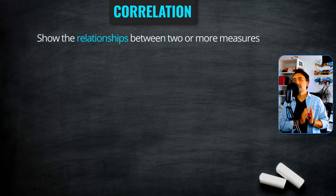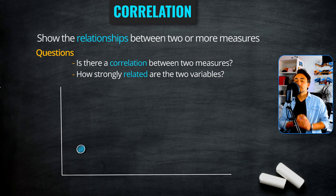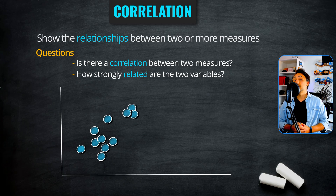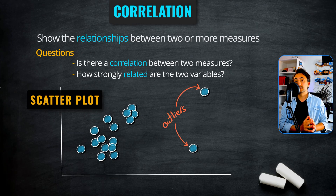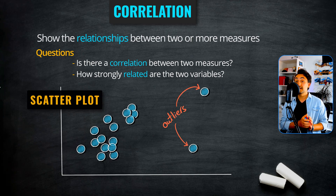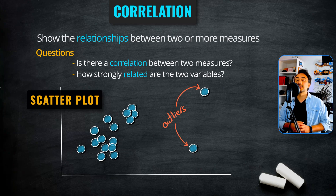Now we have the very important correlations category. It shows the relationship between two or more measures in one visualization. It answers questions like: is there any relationship between two measures, or how strongly related are two variables? The best chart to visualize correlations is the scatter plot, which is very effective at showing relationships between two measures, discovering outliers, adding information to data points, and helping build clusters.